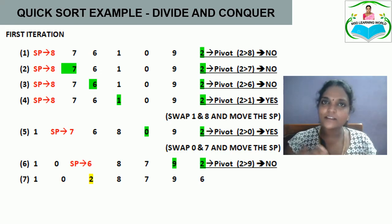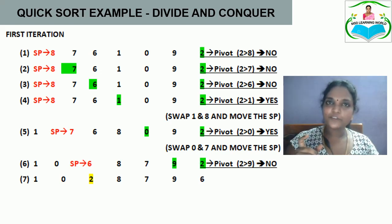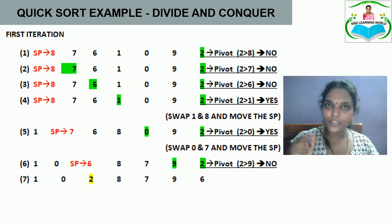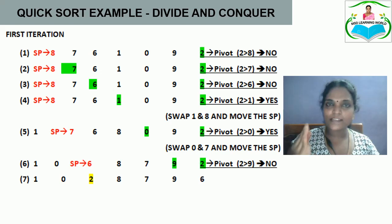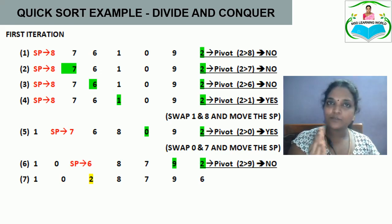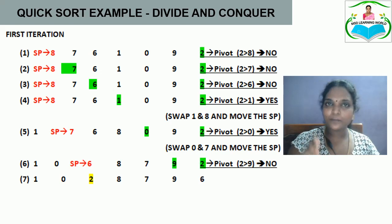Let us see an example for the quicksort algorithm. Instead of just the steps, let us look at an example problem so you understand the algorithm easily. We take the numbers 8, 7, 6, 1, 0, 9, 2. We take the last number 2 as the pivot element. We have a second pointer starting at the first element, which is 8. In the first iteration, the goal is to place the pivot so that numbers to its left are lesser and numbers to its right are greater.